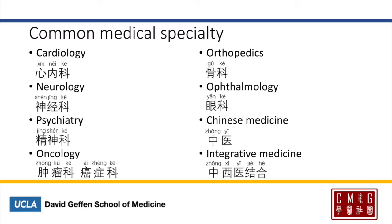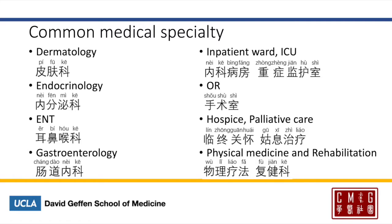Oncology has two names: it's either 肿瘤科 — 肿瘤 meaning tumor — or 癌症科 — 癌症 meaning cancer. Orthopedics is 骨科. Ophthalmology, 眼科. Chinese medicine will be 中医, and integrative medicine 中西医结合 — 西医 just meaning western medicine. Dermatology, 皮肤科. Endocrinology, 内分泌科. ENT will be 耳鼻喉科. And gastroenterology, 肠道内科.